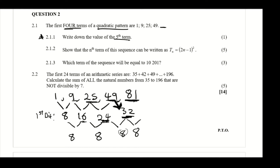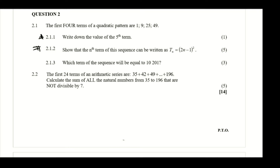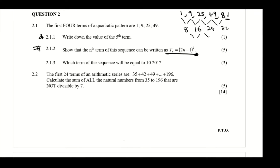Now we solve 2.1.2, where we must show that the nth term of this sequence can be written in a given form. We need to calculate and prove the nth term. We write the sequence: 1, 9, 25, 49, 81. The first differences are 8, 16, 24, 32, and the second differences are all 8, 8, 8 — confirming a constant second difference.